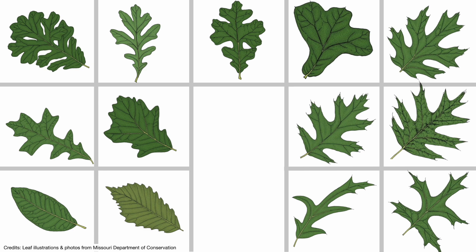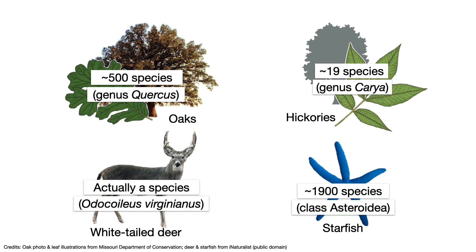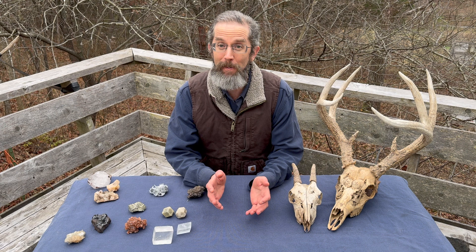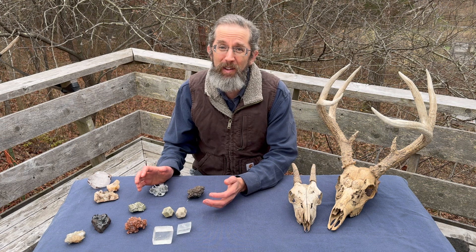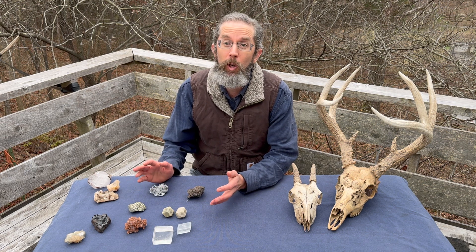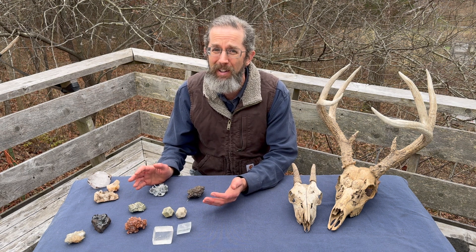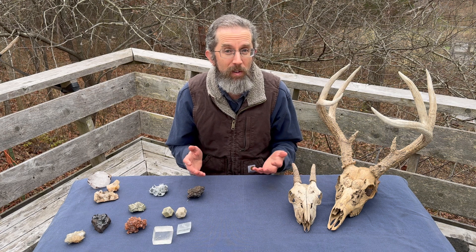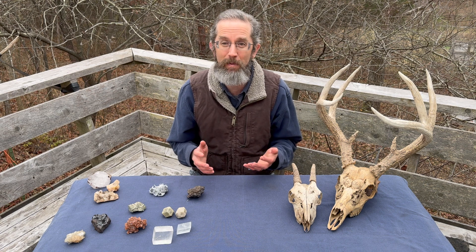Biological reality often defies attempts at easy classification. Similarly, hickories and starfish are also broader groups of related species, while the white-tailed deer is actually a single species. Fortunately, geologists don't have this problem — everything is nice and neat in the mineral world. Yeah, nah. Actually, geology has a similar complexity in distinguishing between specific mineral types, closely related groups of minerals, and broader classes colloquially treated as more specific than they really are. For example, the mineral name feldspar is commonly used as if it's a specific mineral like quartz, but in reality feldspar is a group of closely related minerals whose classification is at least as messy as for oaks.